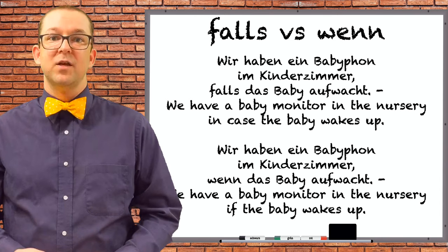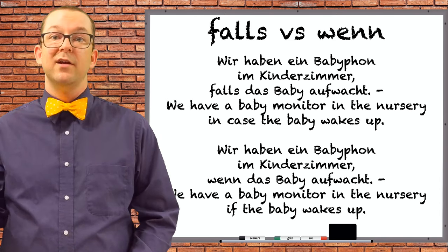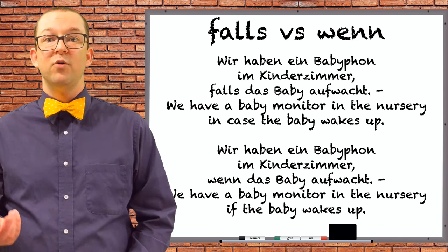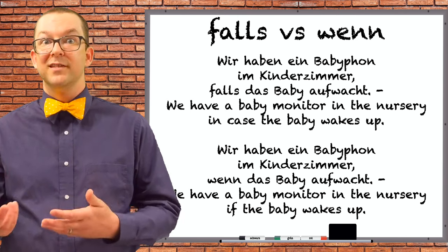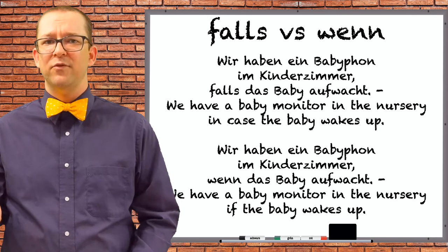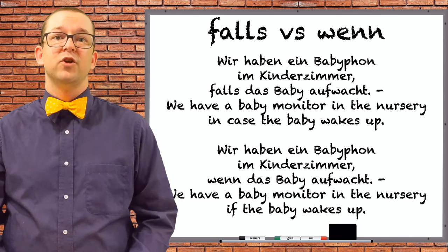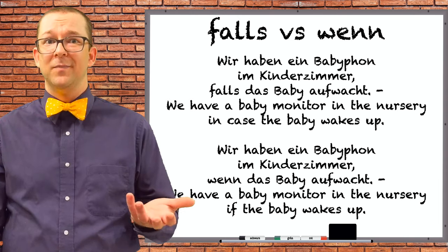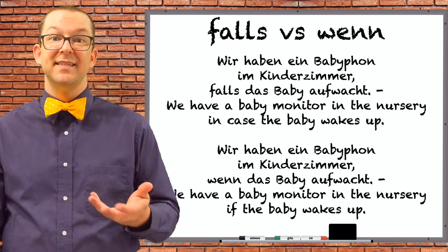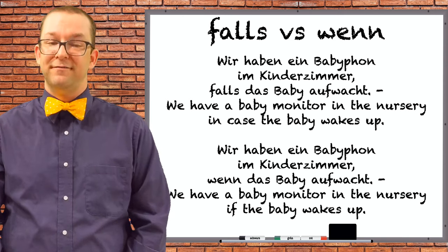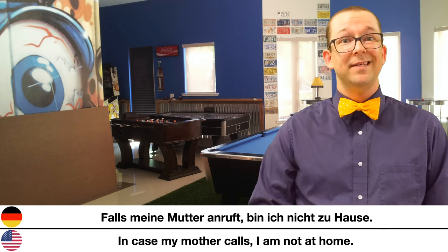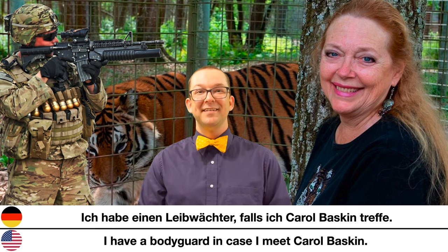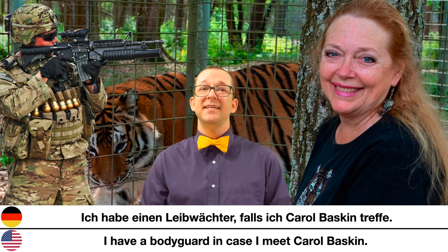'Wir haben ein Babyphone im Kinderzimmer, falls das Baby aufwacht.' — We have a baby monitor in the nursery, in case the baby wakes up. When we use falls, it indicates the monitor was always there so that when the baby wakes up, we would hear it. With wenn, it could imply we would get a baby monitor only if the baby wakes up, which is counterproductive. It is much better to use falls here to avoid confusion. More examples: 'Falls meine Mutter anruft, bin ich nicht zu Hause.' — In case my mother calls, I am not at home. 'Ich habe einen Leibwächter, falls ich Carole Baskin treffe.' — I have a bodyguard, in case I meet Carole Baskin.